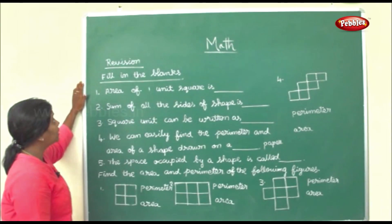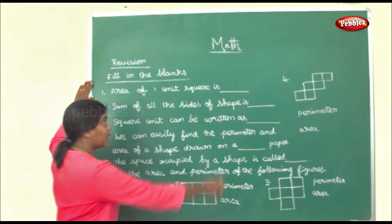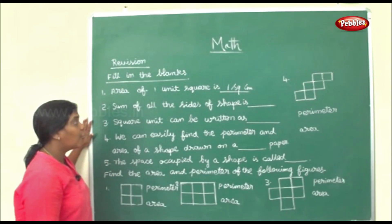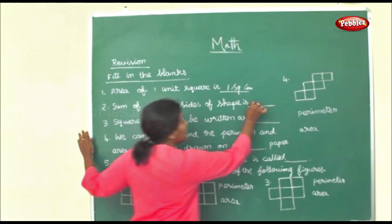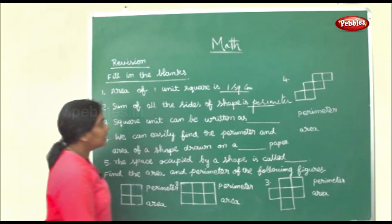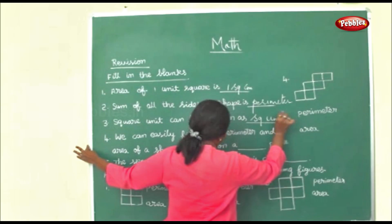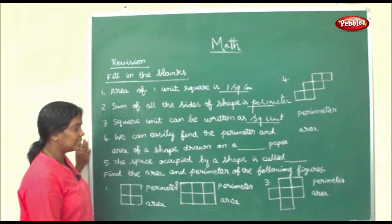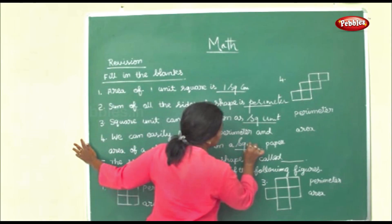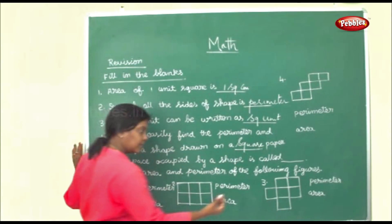As this chapter is going to end, let us do some revision. Fill in the blanks: Area of 1 unit is 1 square centimeter. The sum of all sides of a shape is the perimeter. Square unit can be written as a square unit. We can easily find the perimeter and area of a shape drawn on square paper. The space occupied by a shape is called area.